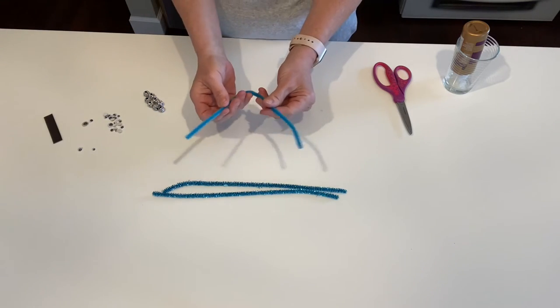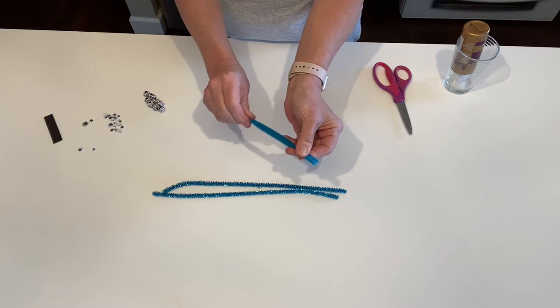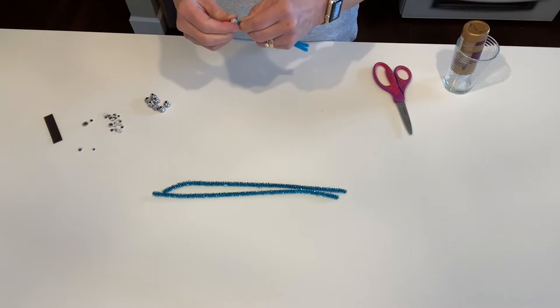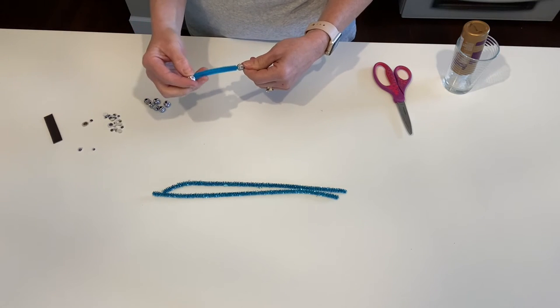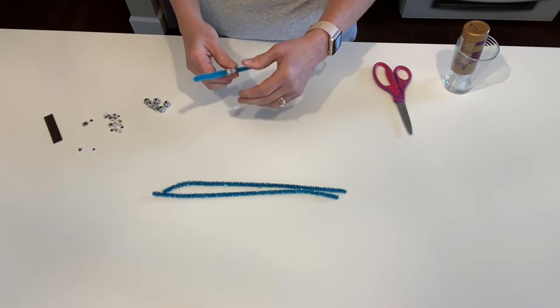Take the body pipe cleaner and evenly fold it in half. Line up those ends and pinch it on the bottom. Then slide your beads on. The beads most of you got might be smaller than these, so you can do nine beads for the body. I only need about six since mine are bigger.